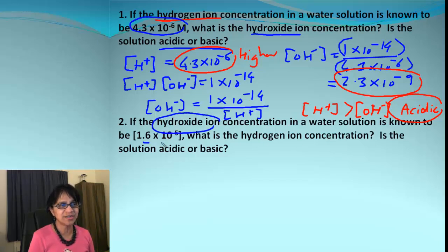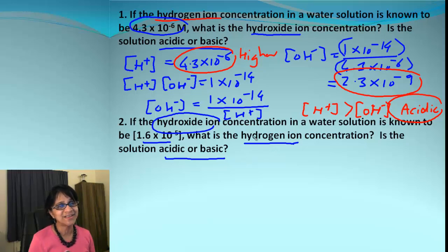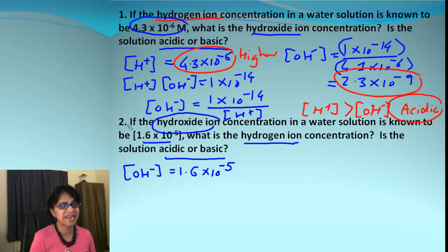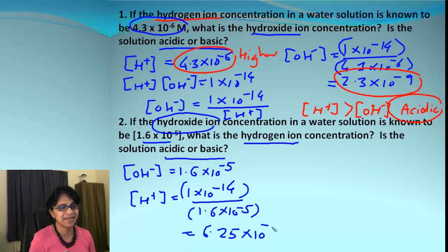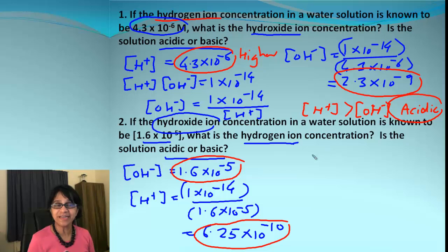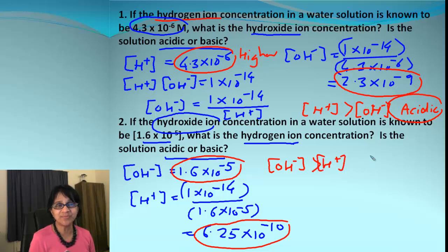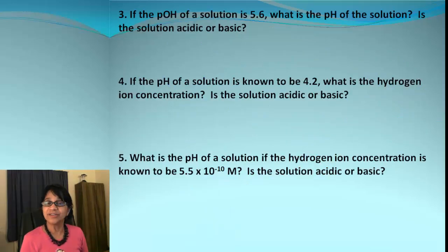Problem 2: Given [OH⁻] = 1.6×10⁻⁵, find [H⁺] and predict if the solution is acidic or basic. Using the same formula, [H⁺] = (1×10⁻¹⁴) ÷ (1.6×10⁻⁵) = 6.25×10⁻¹⁰. Comparing both values, the hydroxide ion concentration is greater than the hydrogen ion concentration, which makes this a basic solution.